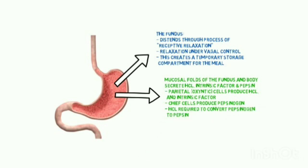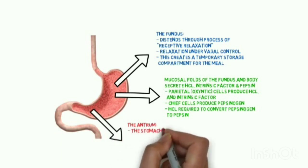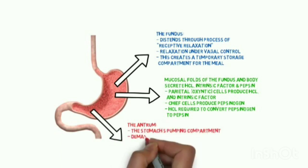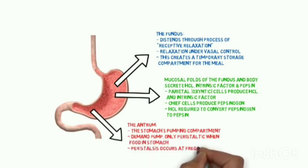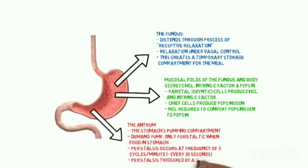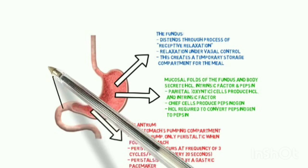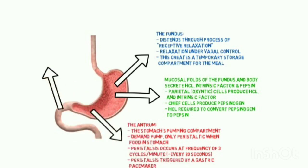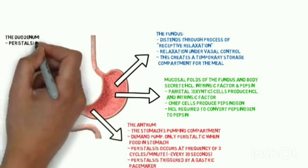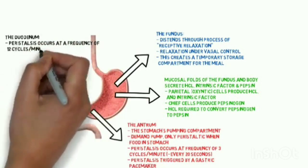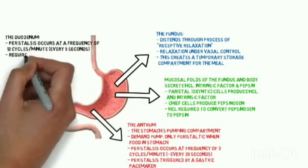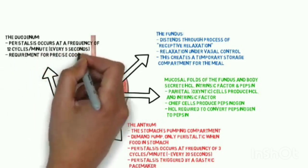The antrum is the stomach's pumping compartment, with peristalsis occurring only when food is present, at a frequency of three cycles per minute — every 20 seconds. Peristalsis is triggered by a gastric pacemaker. In the duodenum, peristalsis occurs at a frequency of 12 cycles per minute — every five seconds — requiring precise coordination of gastric and duodenal peristalsis.